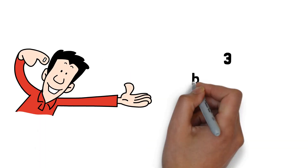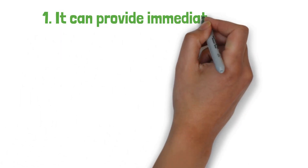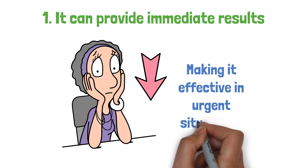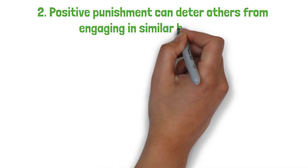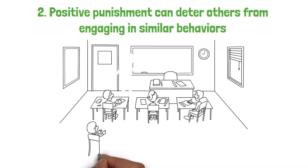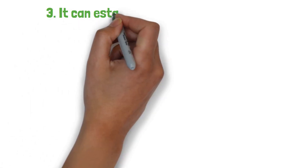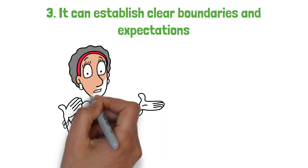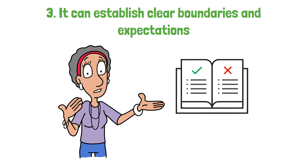Let's look at three benefits of positive punishment. First, it can provide immediate results. When applied correctly, the behavior decrease can be swift, making it effective in urgent situations. Second, positive punishment can deter others from engaging in similar behaviors. For instance, if students see a classmate being reprimanded for talking out of turn, they may be less likely to do the same. Third, it can establish clear boundaries and expectations. When individuals understand the consequences of their actions, they are more likely to adhere to established rules and norms.